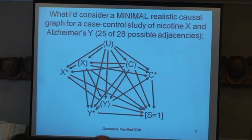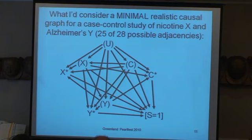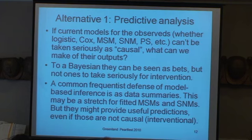If I was doing a retrospective case-control study — for example, nicotine and Alzheimer's, a hot topic — I would end up with a graph like that, and I could look at it quickly and say I don't have identification from what's observed. Things observed are the things without parentheses; I use parens to denote unobserved things, and then there are their measurements: X-star, Y-star, C-star. This is why epidemiology generates so much controversy — rarely do we get identification from the observations.